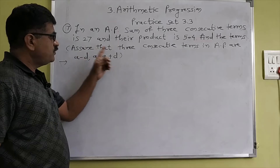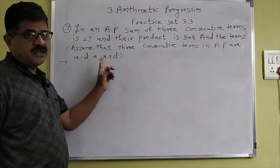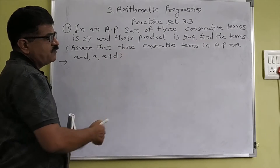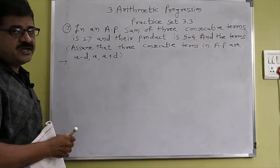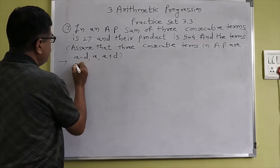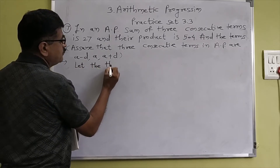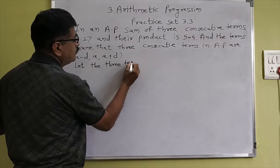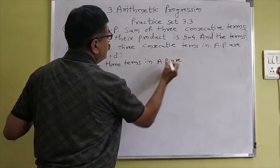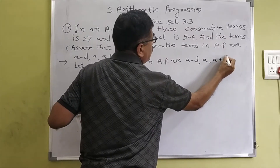Here we have given: assume that three consecutive terms in AP are A minus D, A, and A plus D. Let the three terms in AP be A minus D, A, and A plus D.